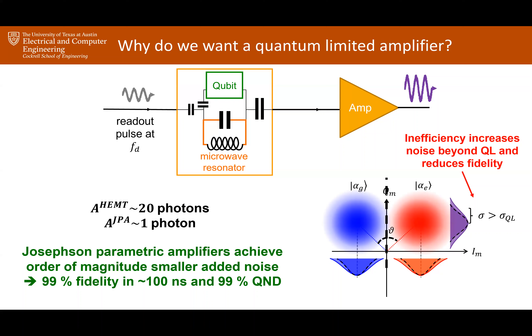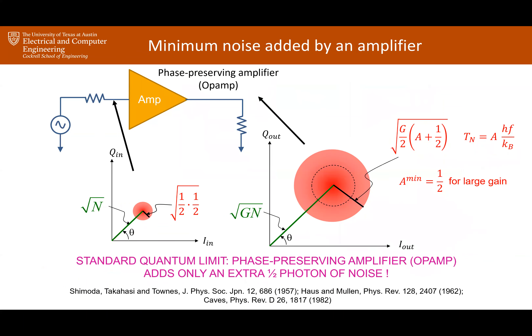Regarding the half-photon minimum noise: for large gain — which you always need to beat the detector, typically a gain of 100 — you are effectively adding at the minimum half-photon scale. Using a gain of 1.2 wouldn't be useful even if it added no noise, because it wouldn't overwhelm the detector noise.